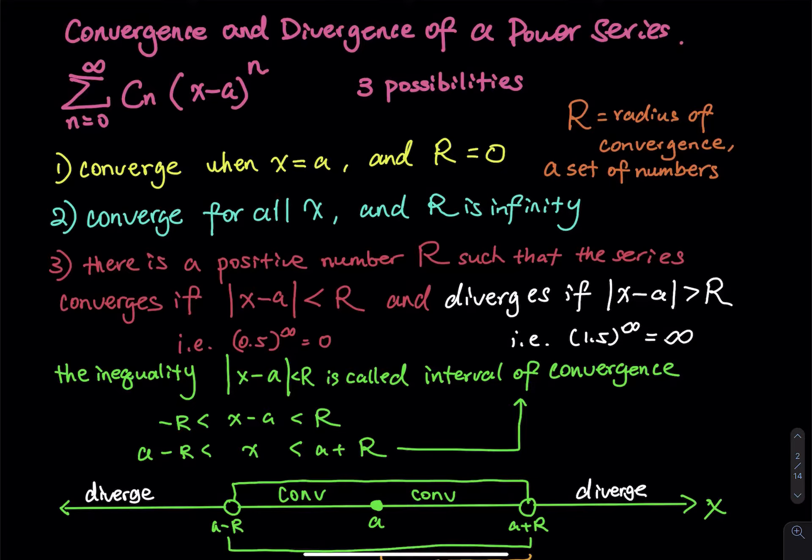By the way, what is radius of convergence? Think about that as a set of numbers, like an interval. Let's say an interval between negative two and two. You have many numbers between negative two and two. Think about that as a radius of convergence, a set of numbers.